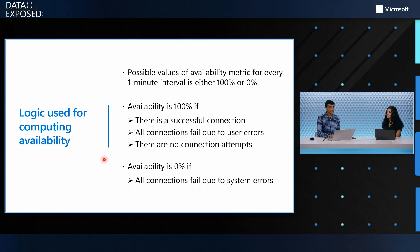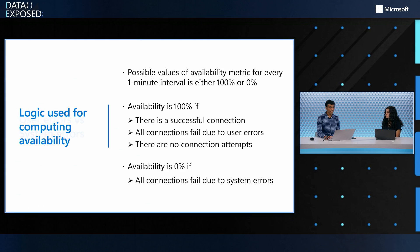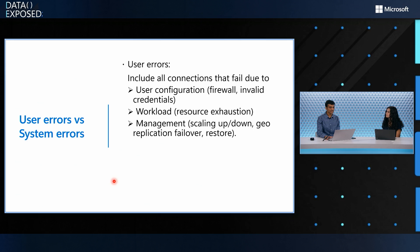Availability is zero if all connections in that minute fail due to system errors, meaning there is an issue going on on the Azure SQL DB service side. That's when we mark that DB as unavailable for that minute.